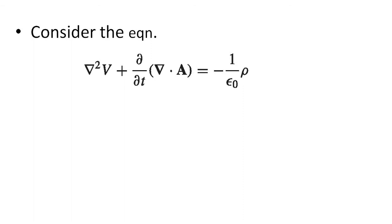Now consider the equation del square V plus d by dt of del dot A equal to minus rho by epsilon 0. In this equation, let us substitute this condition, that is Coulomb gauge del dot A equal to 0.